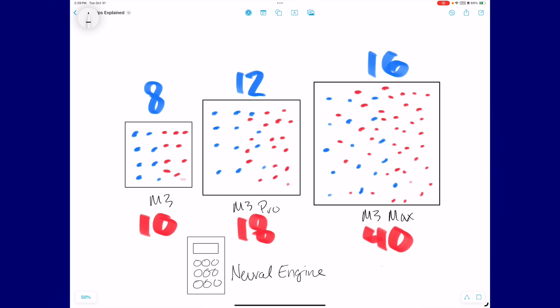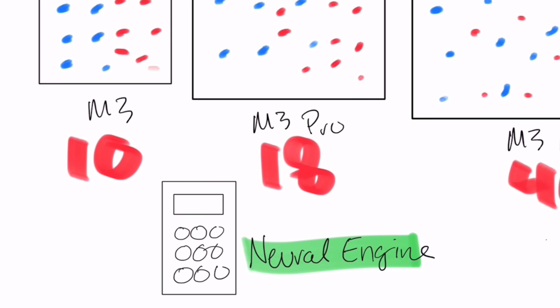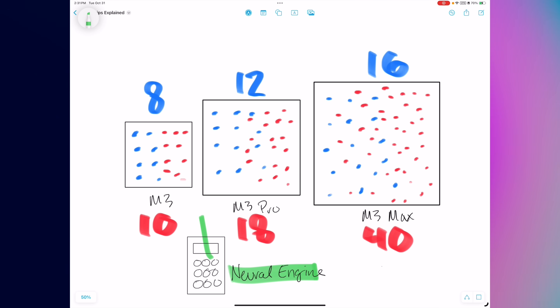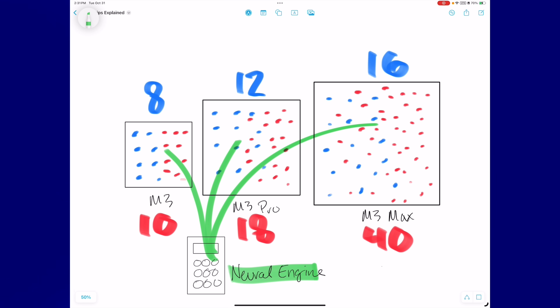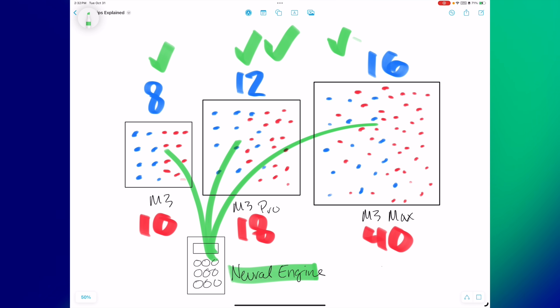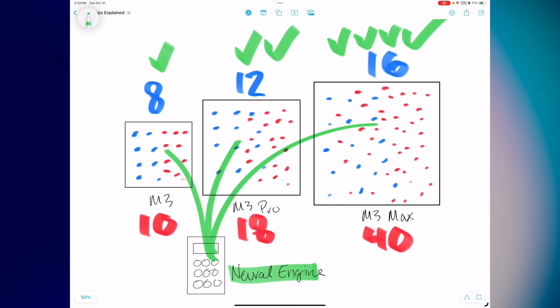And that leads us to the neural engine — Apple's always talking about it. Most people think it sounds cool and seems important but don't know what it does. The neural engine is like a super smart calculator. It helps the computer quickly solve puzzles, especially ones with pictures and patterns. It comes in handy when you're editing photos or when your computer needs to recognize your voice. All three M3 chips have this smart calculator built in, but the higher-end models are going to solve puzzles even faster, making tasks quicker and smoother.